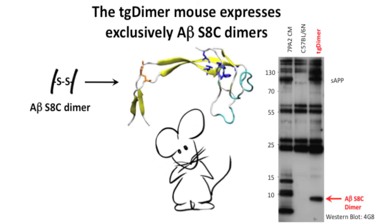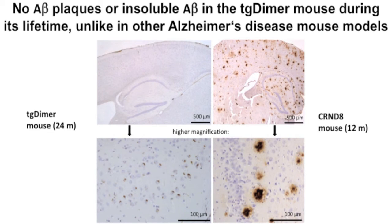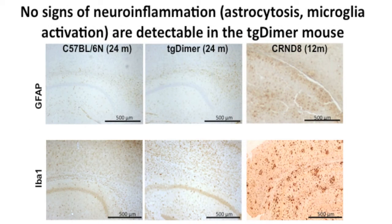The generated transgenic mouse for A-beta dimers, termed TG dimer mouse, expresses exclusively soluble A-beta dimers and not monomers or higher molecular weight soluble or insoluble A-beta multimers. During its entire lifespan of two years, this TG dimer mouse line does not develop insoluble A-beta plaques, unlike comparable transgenic mouse models for Alzheimer's disease like the CRND8 mouse, even though the generated levels of A-beta are similar. No histological changes in astrocytosis or neuroinflammation are observed in the TG dimer mouse.